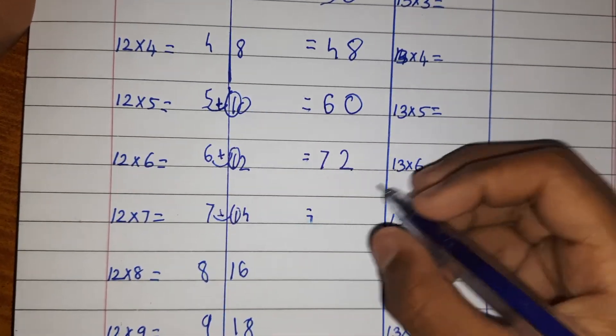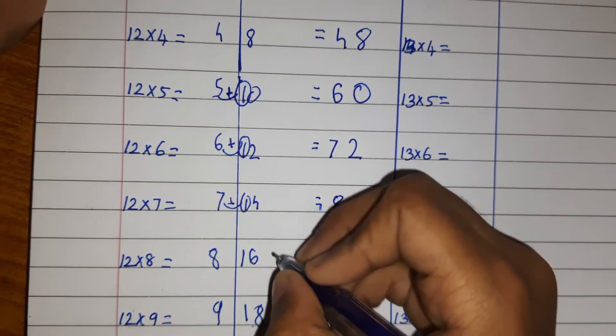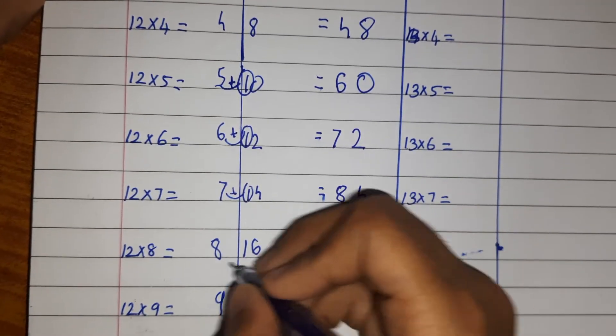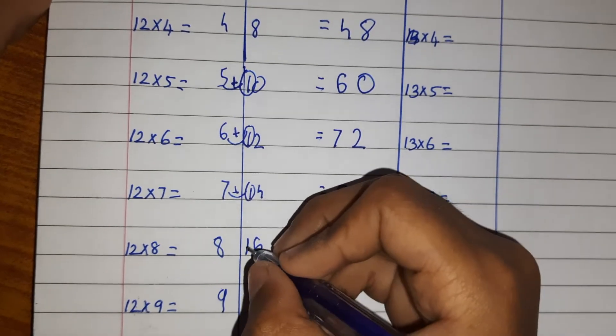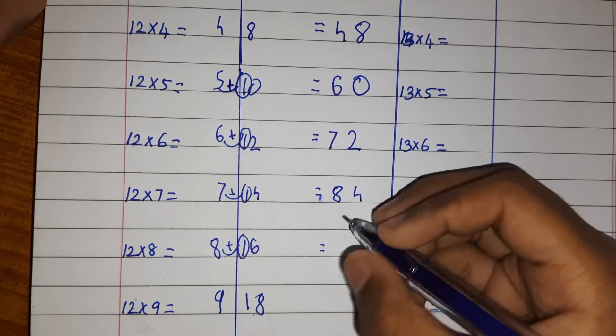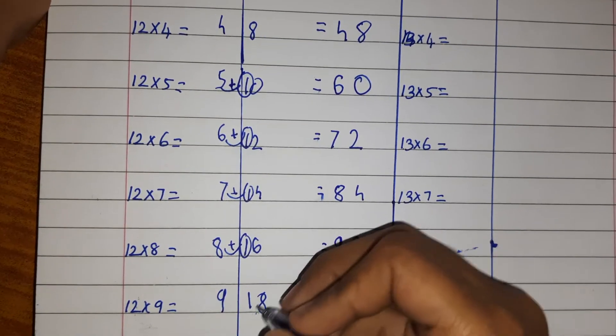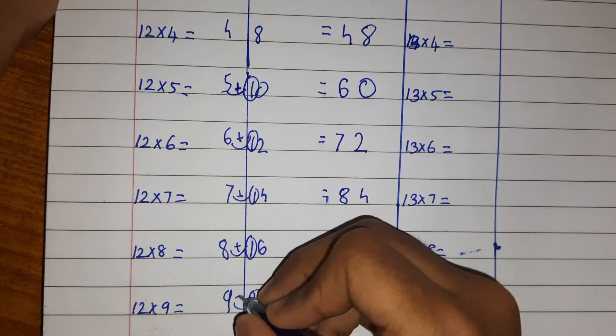I'm doing it like that. Okay, 84. Then take this one and add to the eight.